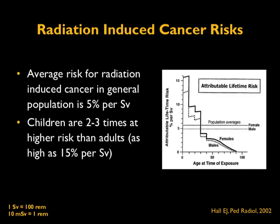Coming back to risk estimation: radiation-induced cancer risk is a concern with radiation exposure, as a long-term cancer risk. In general, the average risk for radiation-induced cancer is five percent per sievert. Sievert is a very large quantity; in medical imaging we use doses on the order of millisieverts — one-thousandth of a sievert. On the graph, attributable lifetime risk per sievert is shown across age at time of exposure. Children are two to three times at higher risk for the same exposure than adults, and females are slightly higher than males due to breast tissue.